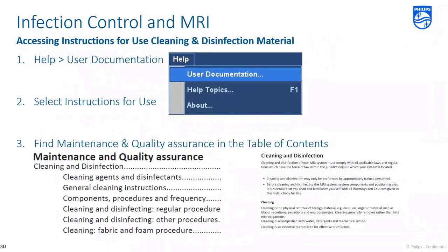The instructions for use included with each MR system contain in-depth cleaning and disinfection material in addition to the general programs just discussed. To access this information at the MR console, click on the main toolbar, click Help, then click User Documentation. Next, click Instructions for Use to open the document. Use the Table of Contents to find the Maintenance and Quality Assurance chapter to access additional cleaning and disinfection information specific to your system.